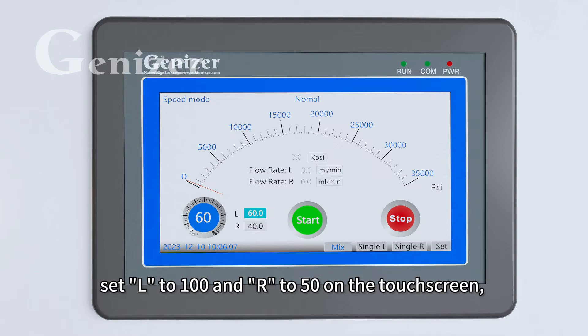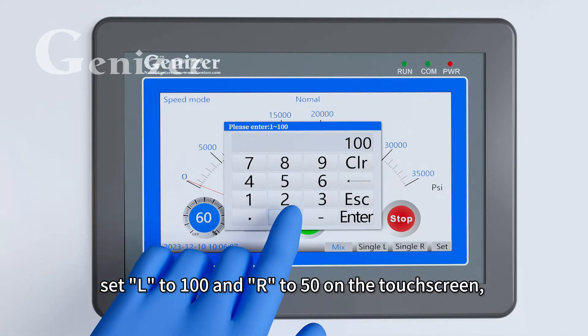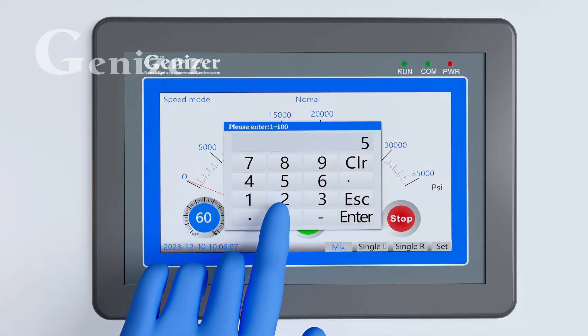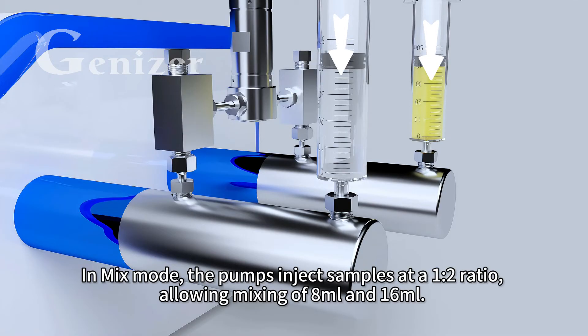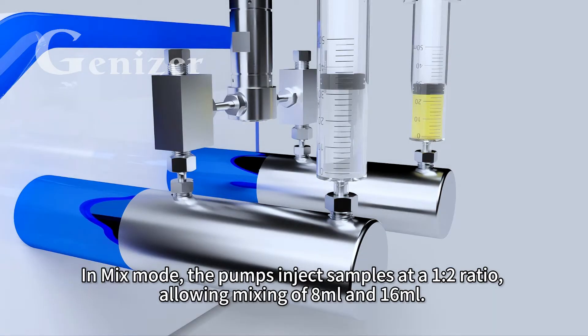Set L to 100 and R to 50 on the touchscreen, and press start to begin. In mix mode, the pumps inject samples at a one-to-two ratio, allowing mixing of 8 milliliters and 16 milliliters.